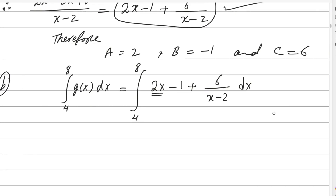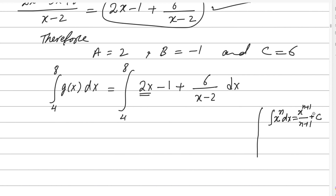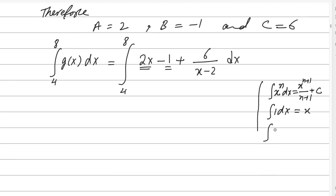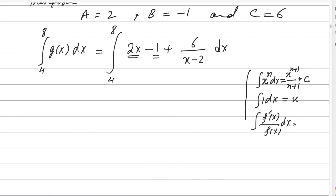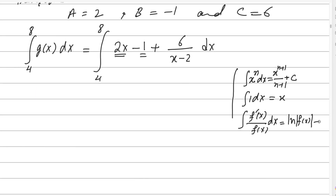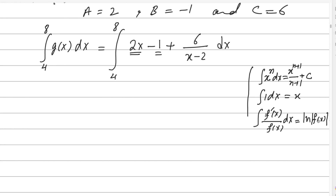We will apply the rules of integration. The integral of x to the power n dx equals x to the power n plus 1 divided by n plus 1, plus c. The integral of 1 is always x. There is also a very important formula you should memorize: if the numerator is the derivative of the denominator — that is, the numerator is f-prime of x and the denominator is f of x — then the integral equals log of f of x, plus c. We will use these three formulas to integrate this function.